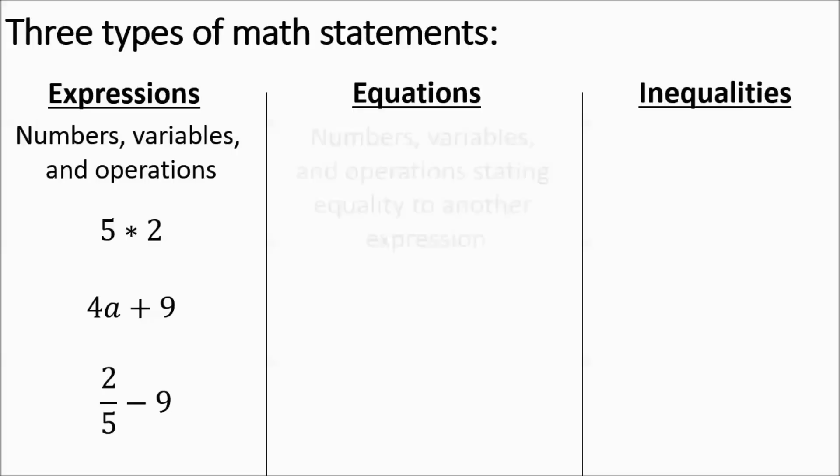Equations are numbers, variables, and operations stating equality to another expression. So that basically means anything with an equal sign is an equation. 5 times 2 equals 10. 4a plus 9 equals 5b minus 4. You've got expressions on both sides of the equal sign. 6n equals 2 fifths minus 9. Those are all equations.